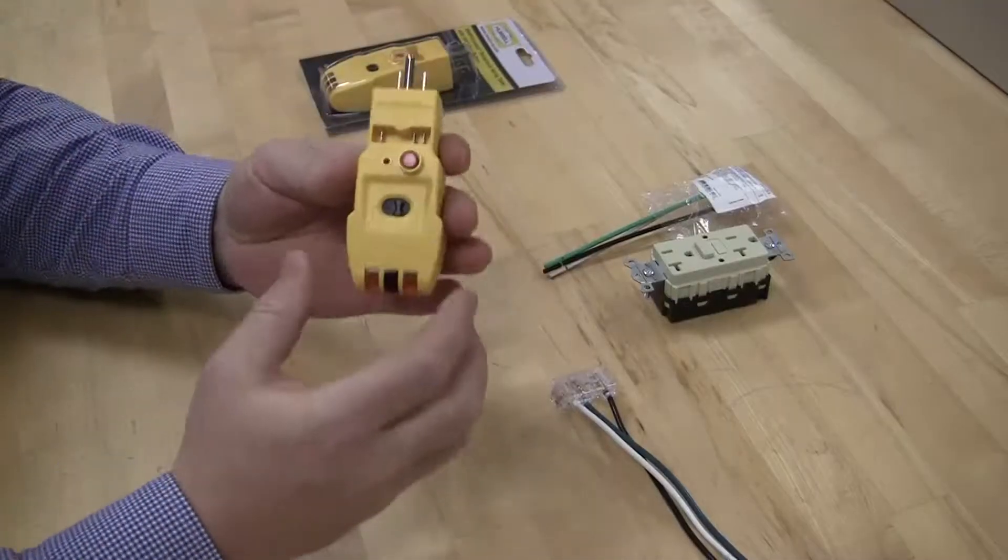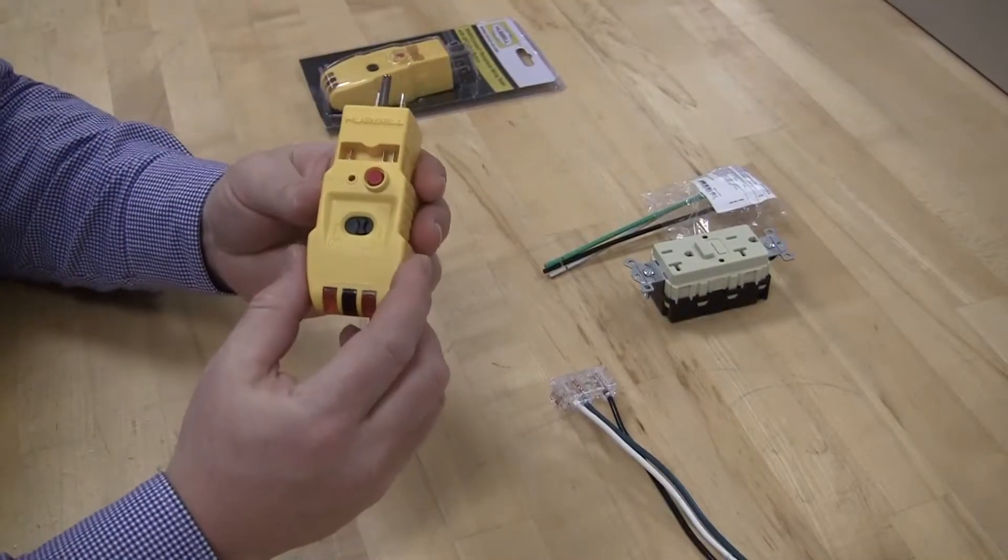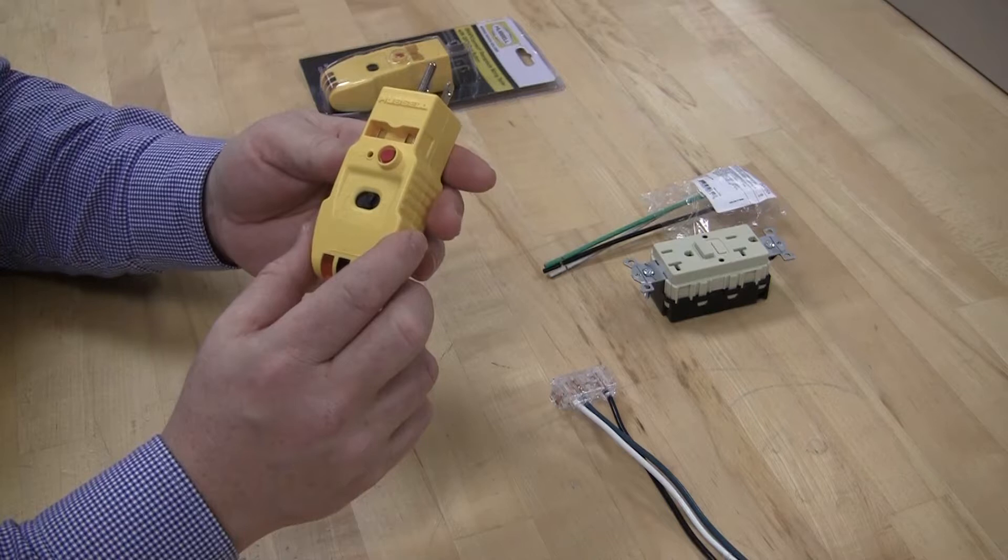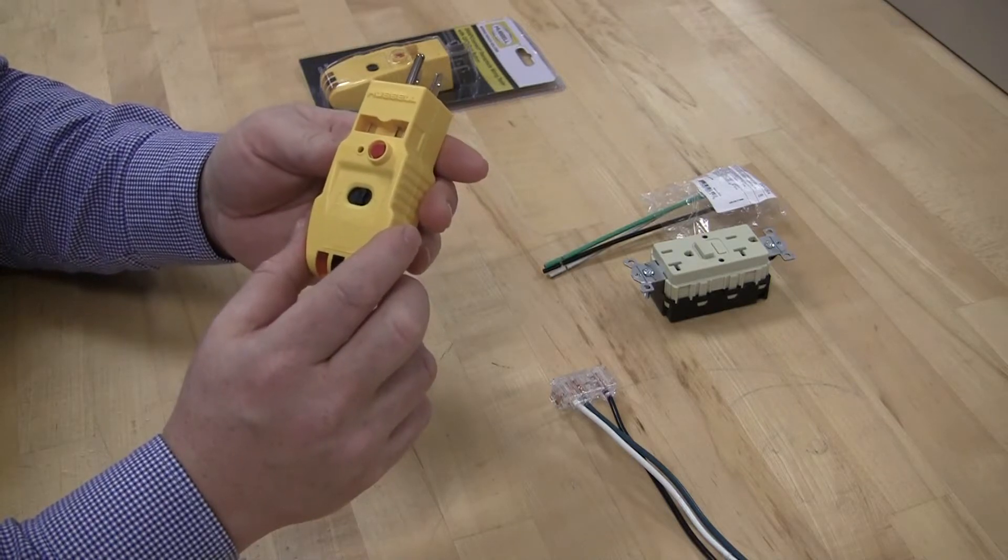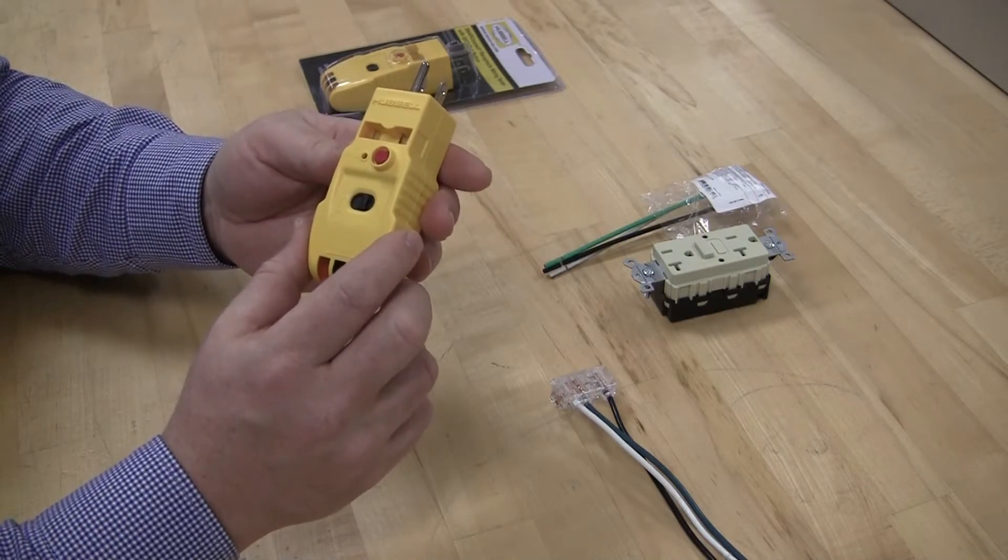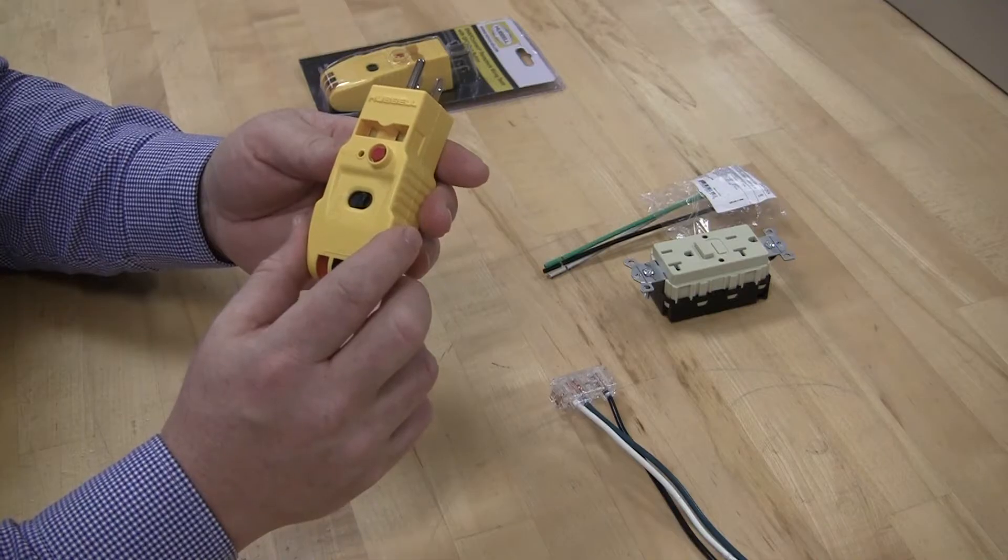It can test a standard receptacle for proper circuit wiring, test the SnapConnect wiring terminal at rough-in, and test the function of GFCI receptacles.